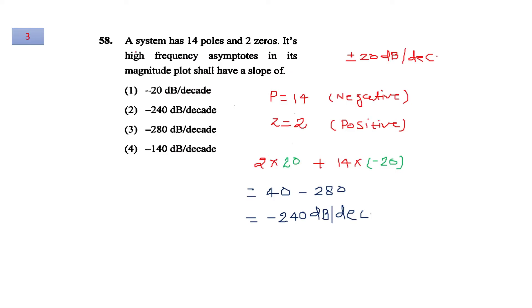For question number 3, a system having 14 poles and 2 zeros, its high frequency asymptote in its magnitude plot shall have a slope of: This question is from the Bode plot. The asymptotic plot of Bode plot will have a slope of plus minus 20 dB per decade. Positive sign is used for zero frequencies and negative sign is used for pole frequencies. So single pole or single zero contributes 20 dB per decade. By following this convention with the number of poles and zeros given, you will get the result minus 240 dB per decade. That will be the slope of this asymptotic plot.